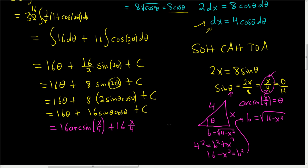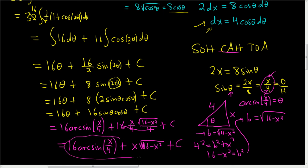And cosine is adjacent over hypotenuse. So the adjacent is the square root of 16 minus x squared. And the hypotenuse is 4. And then we have the plus and the C. Looks like the 16 cancels with this 16. So we end up with 16 arcsine of x over 4 plus x square root 16 minus x squared plus our constant. And that is the final answer.